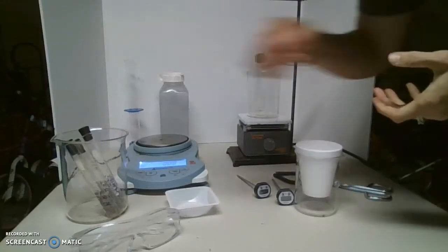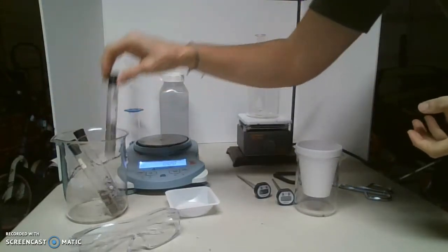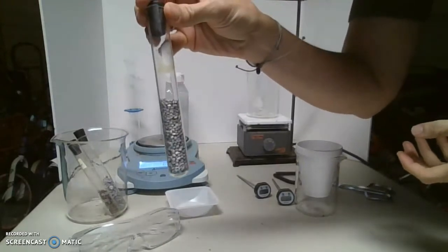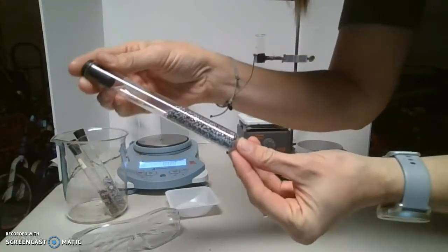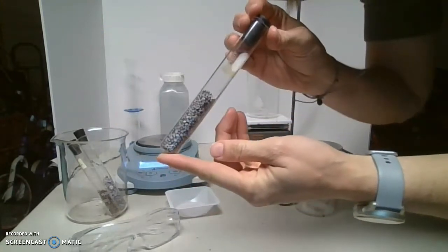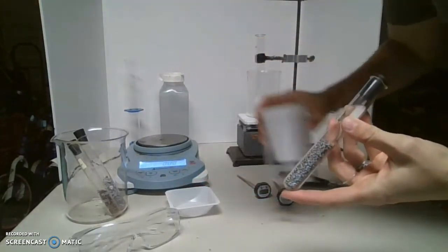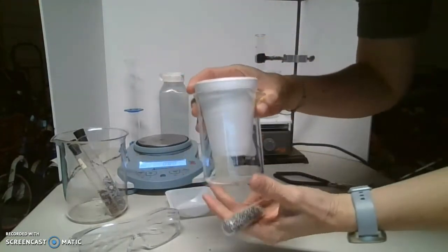Specific heat of a metal lab. We are going to determine what the specific heat is of some tin shot. And the way that we do this is by using a very crude calorimeter.